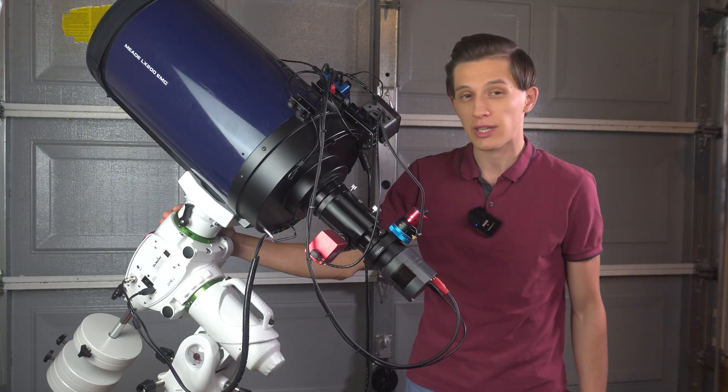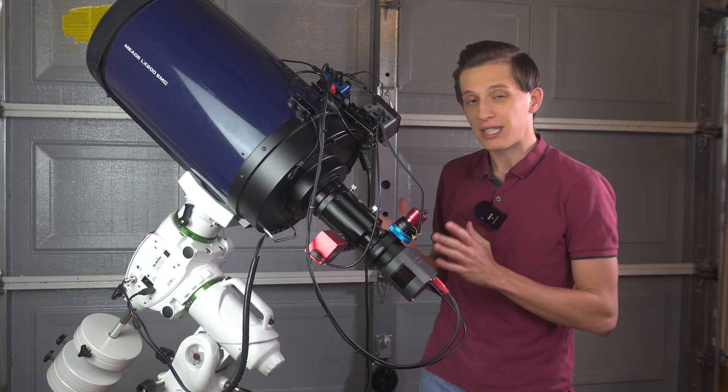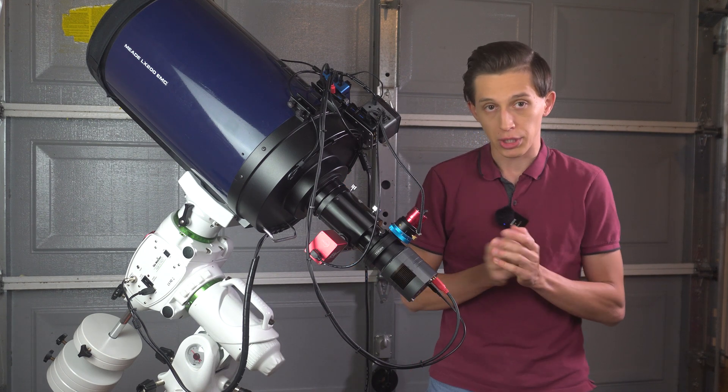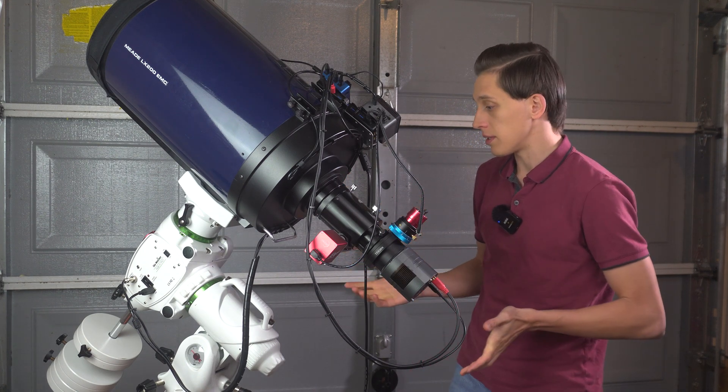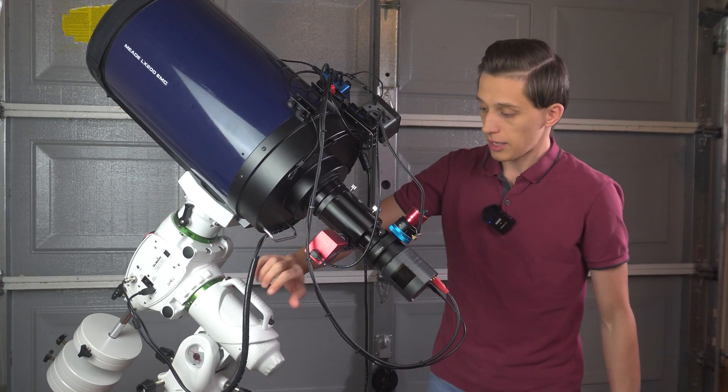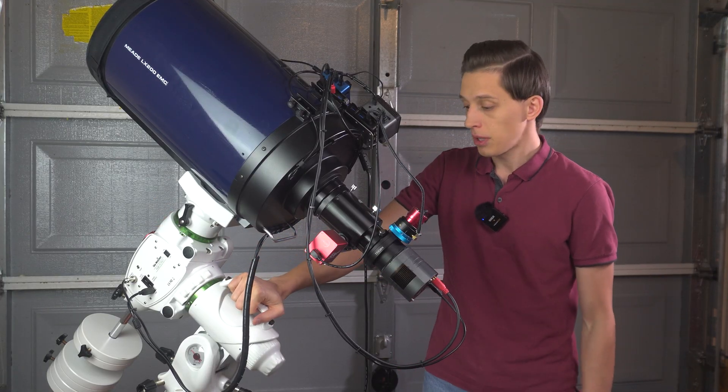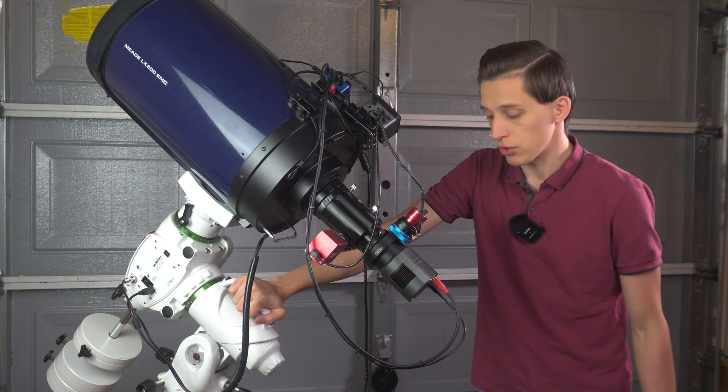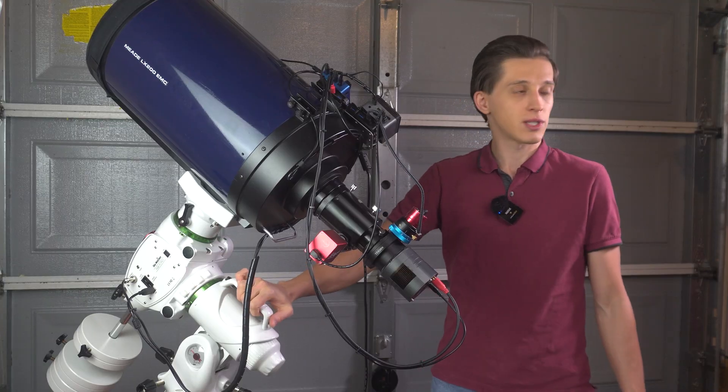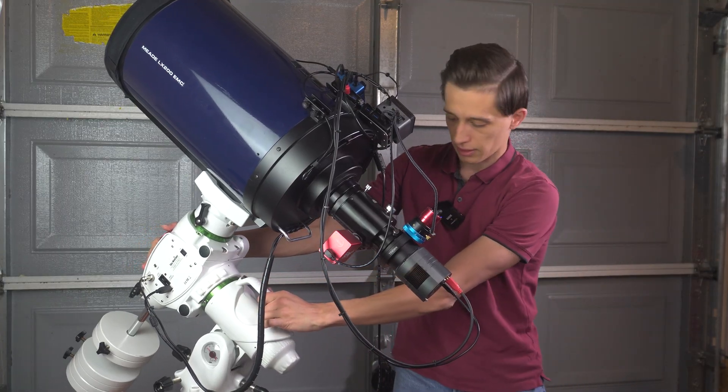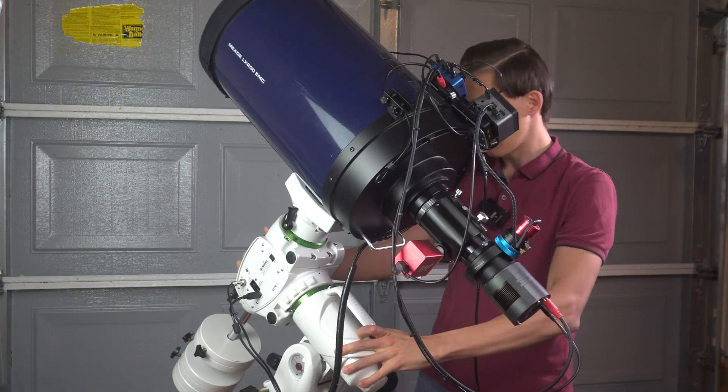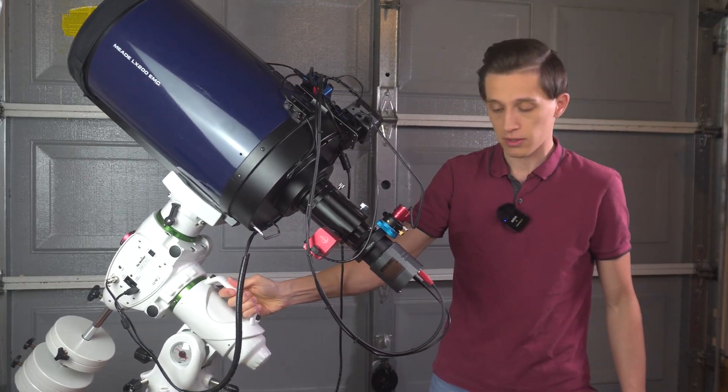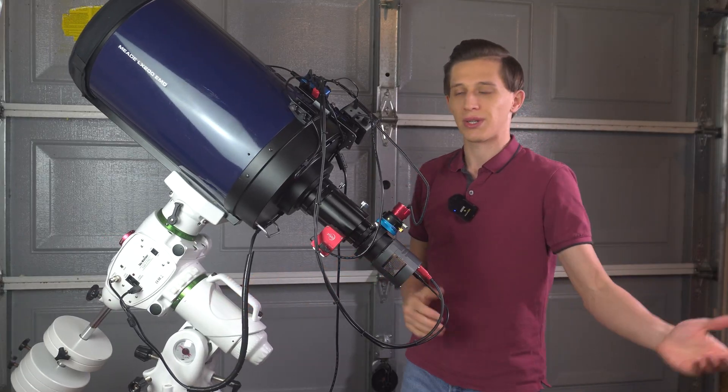Talking about the mount, I have a Skywatcher EQ6R Pro mount. Ideally for a 10 inch Meade category you guys want to use something bigger. However, what I noticed is that once you balance the telescope properly on the Skywatcher EQ6R Pro mount, you still can get pretty nice and decent guiding results. And also consider that I use this telescope on my telescope cart. Like if you follow my channel, you know that I kind of have this DIY made telescope cart.